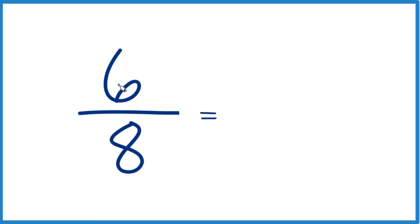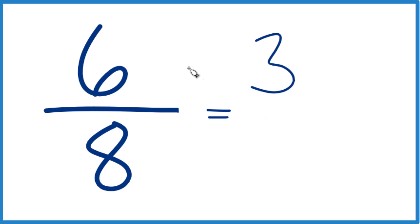So six divided by two, that's three. Three times two is six. Eight divided by two is four.